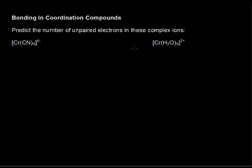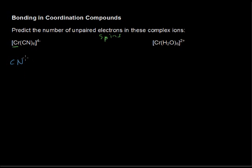In this video I'll introduce you to bonding in coordination compounds by looking at the number of unpaired electrons or unpaired spins in these complex ions. The first one is CrCN6 4-. What we have to consider is the number of unpaired electrons in just the chromium metal. What we look at is the ligands, that is the stuff that's attached to the transition metal. The ligand we have is the cyanide ion.